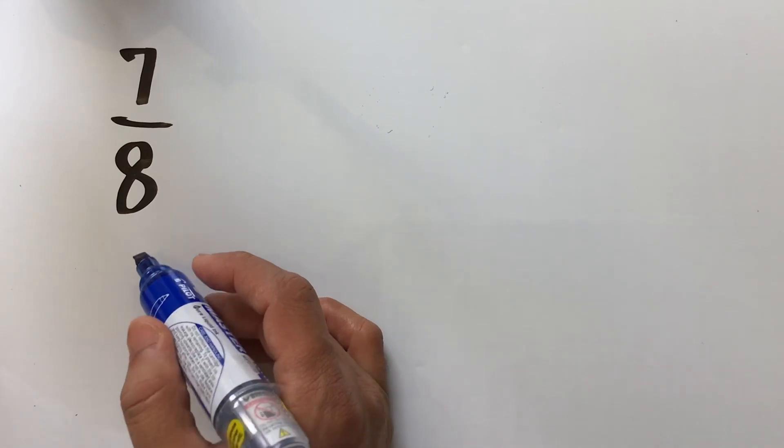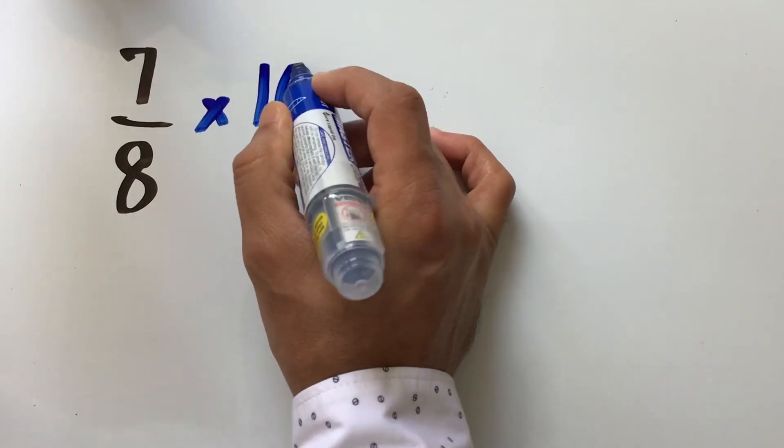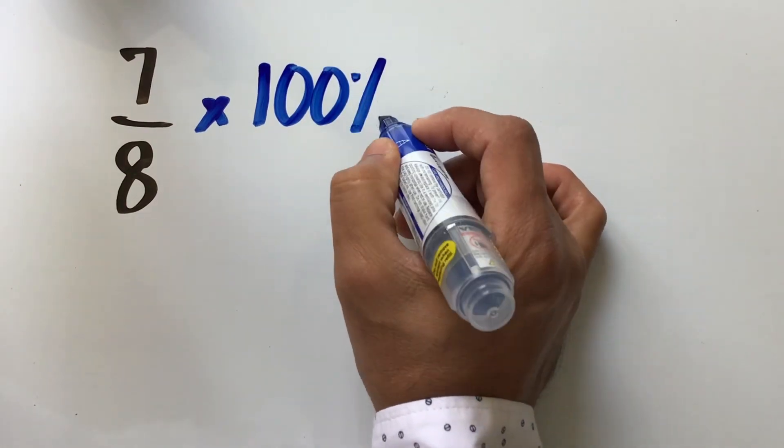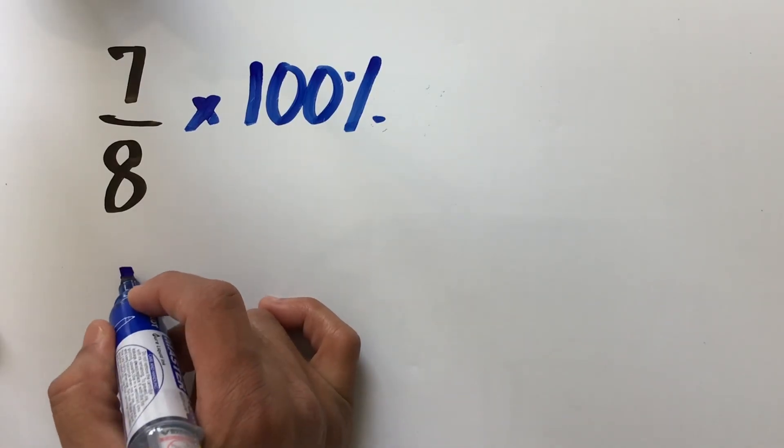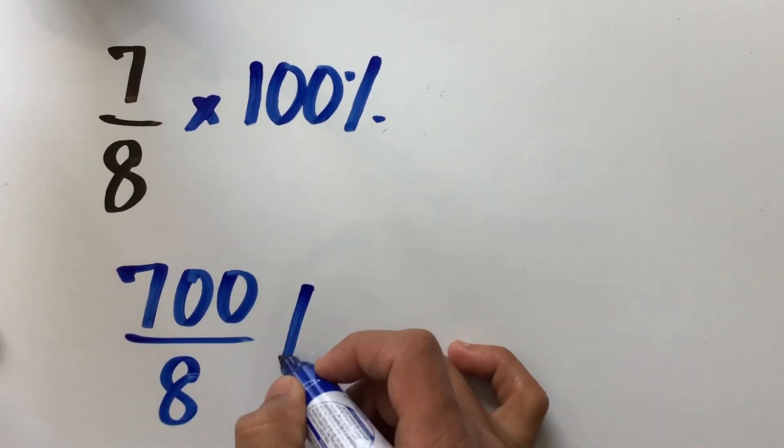Again, as you can see, it is not easy for us to convert 8 into 100. Therefore, we use the second method, where we multiply the fraction by 100 percent.